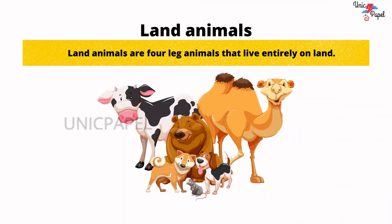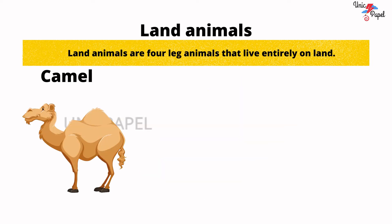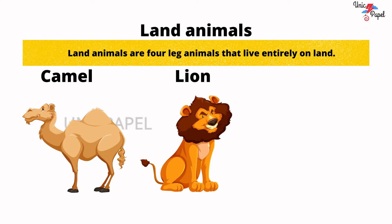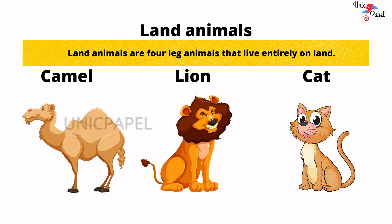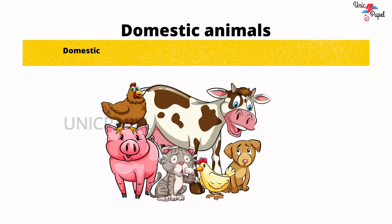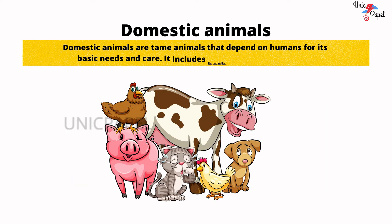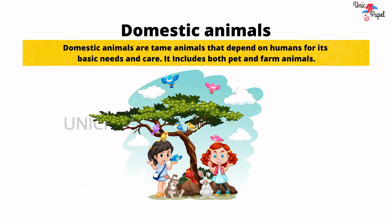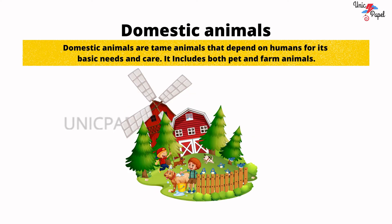Land animals. Land animals are four-legged animals that live entirely on land. Example: camel, lion, cat, and many more. Domestic animals are tame animals that depend on humans for their basic needs and care. It includes both pet and farm animals.